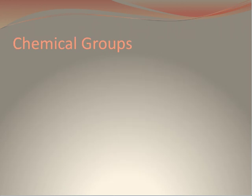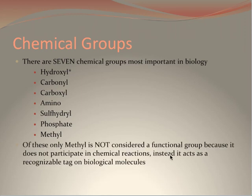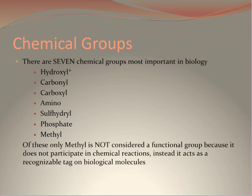Now here we're looking at our seven chemical groups that are the most significant in biology. They are the following: hydroxyl, carbonyl, carboxyl, amino, sulfhydryl, phosphate, and methyl groups. Of these only the methyl groups are not considered a functional group as it does not participate in chemical reactions, but instead functions as a tag on biological molecules such as DNA.